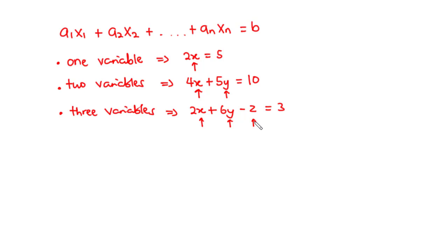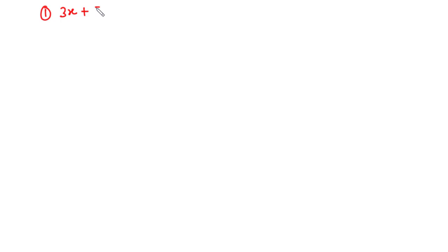So, we can have a number of linear equations — this is just a few of them. Now, how do we find the solution to a given linear equation involving two variables? One thing we need to understand is that a single linear equation that contains at least two variables with non-zero coefficients has infinitely many solutions.